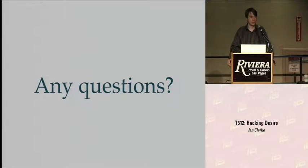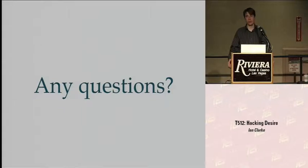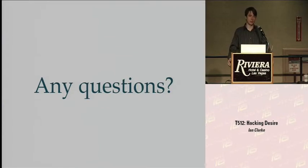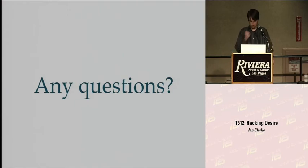Audience question about how people's interests change over time: My approach is that the algorithm will forget old data — when it's using too much disk space, it starts throwing away the oldest ratings — so it focuses more on recent ratings. I think there is a lot of scope to examine just how quickly people's interests change. It's a pretty brain-dead approach but it seems relatively effective. You're absolutely right that people's interests do change over time, and a lot of collaborative filters don't acknowledge that fact.